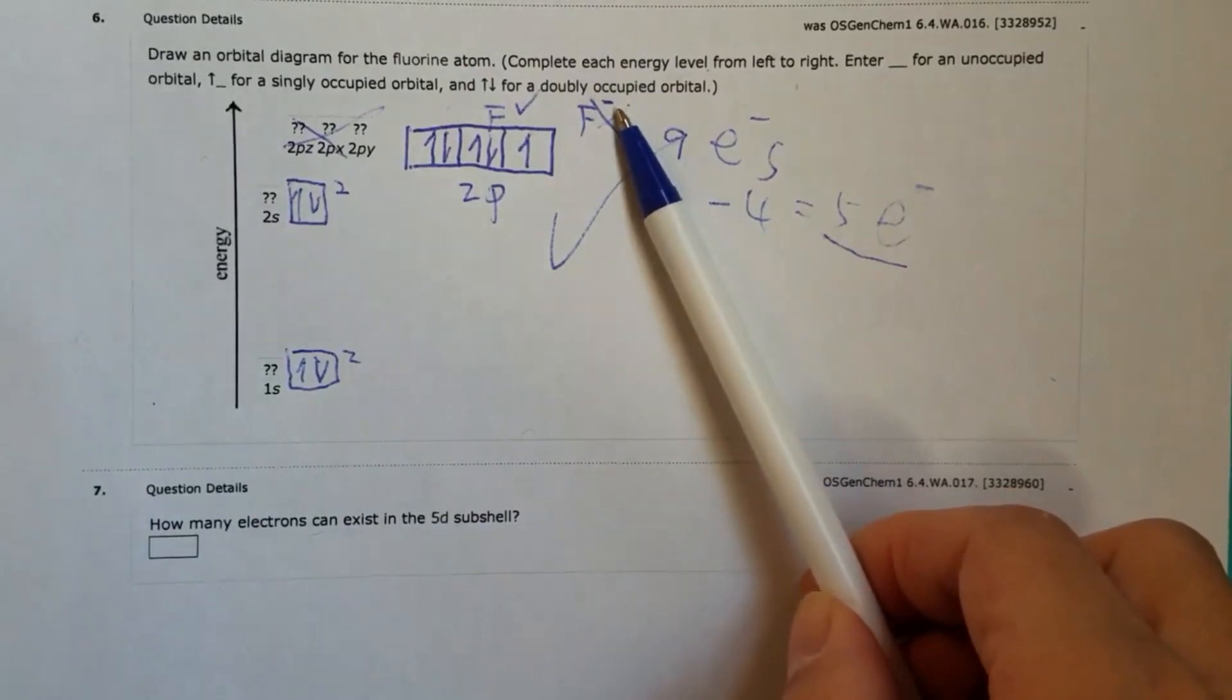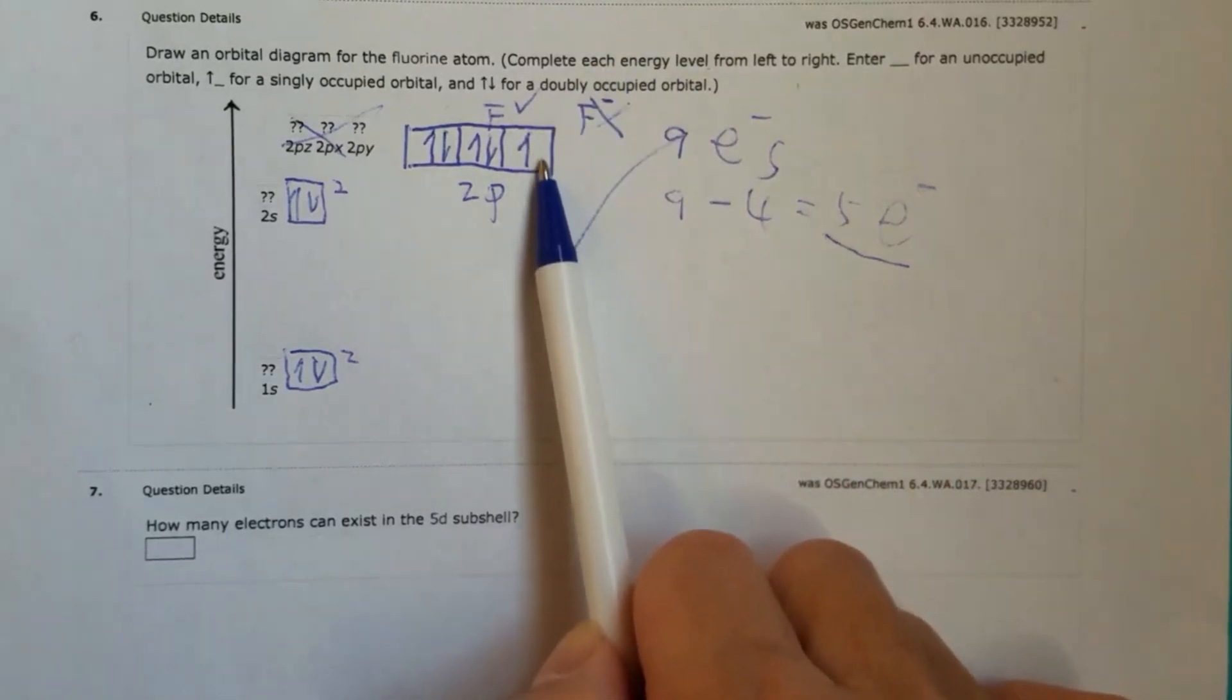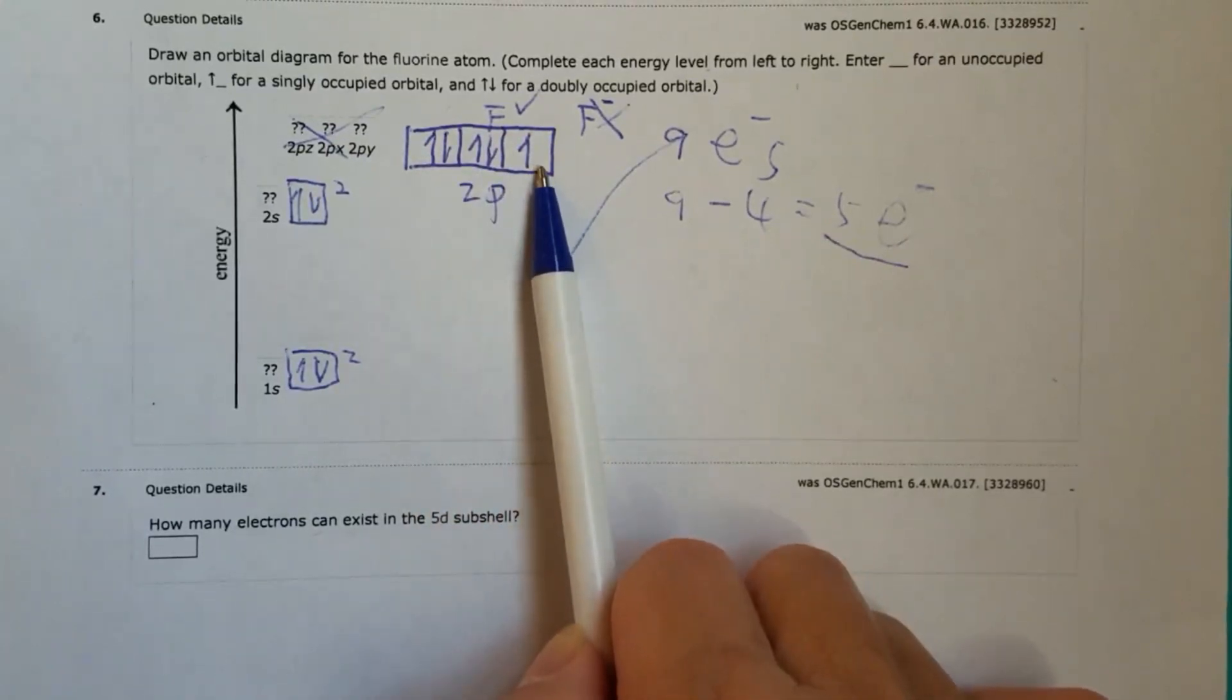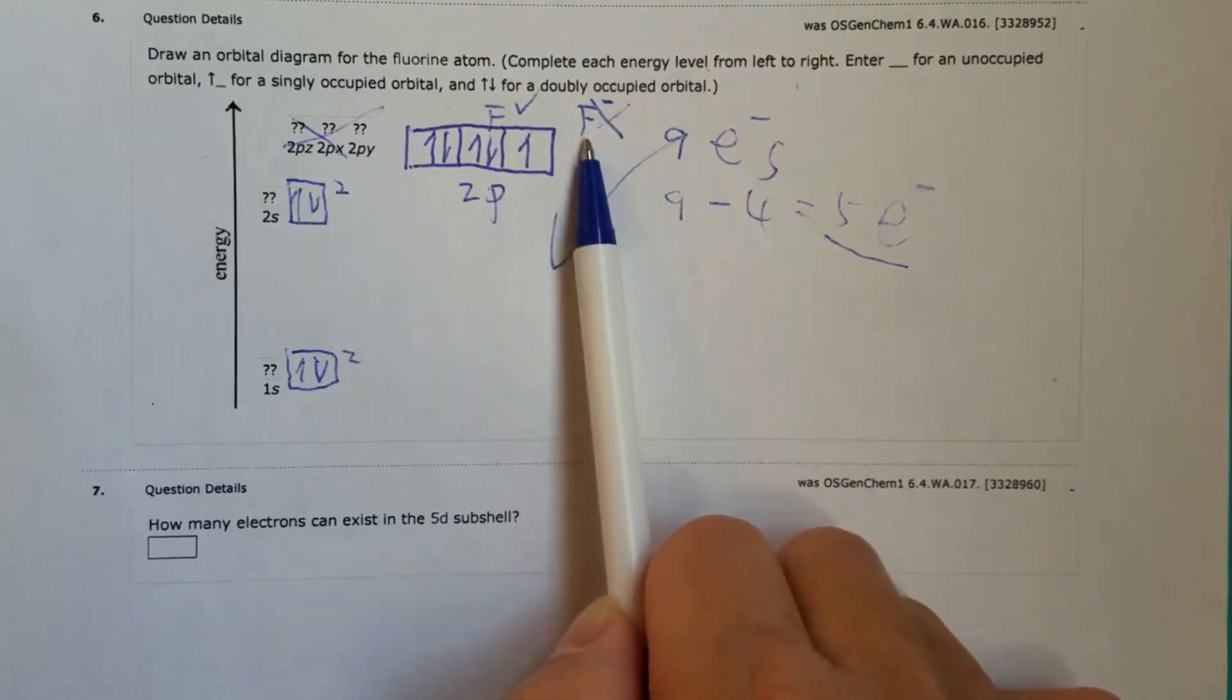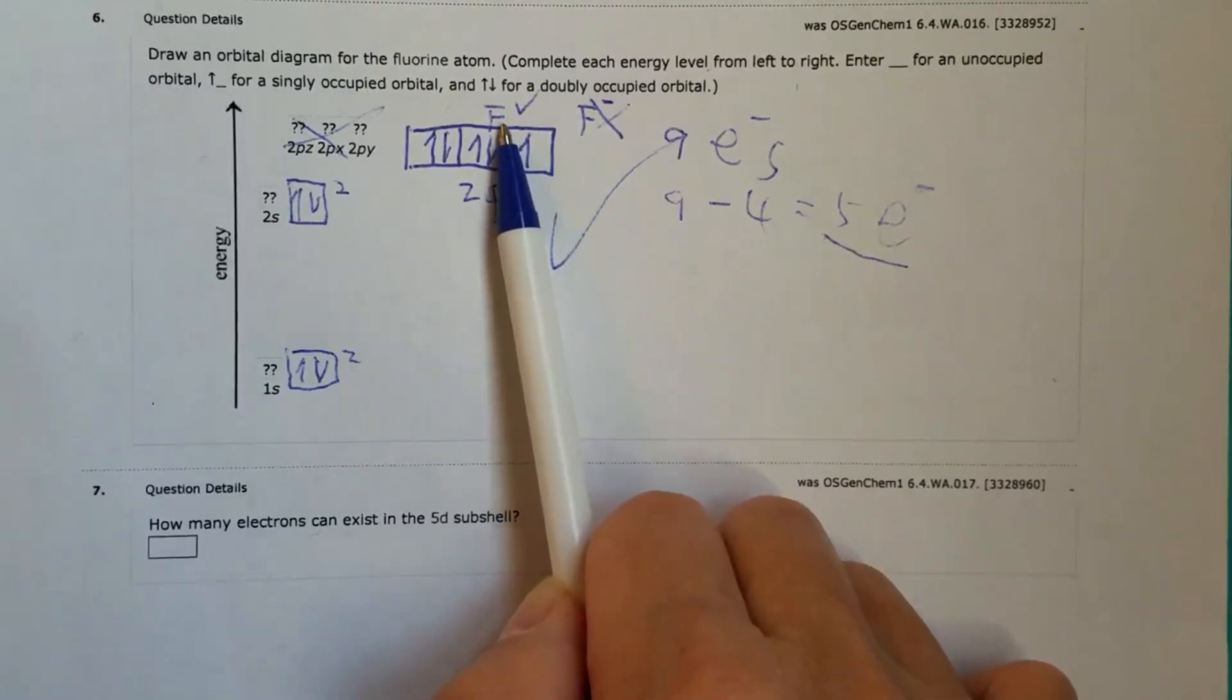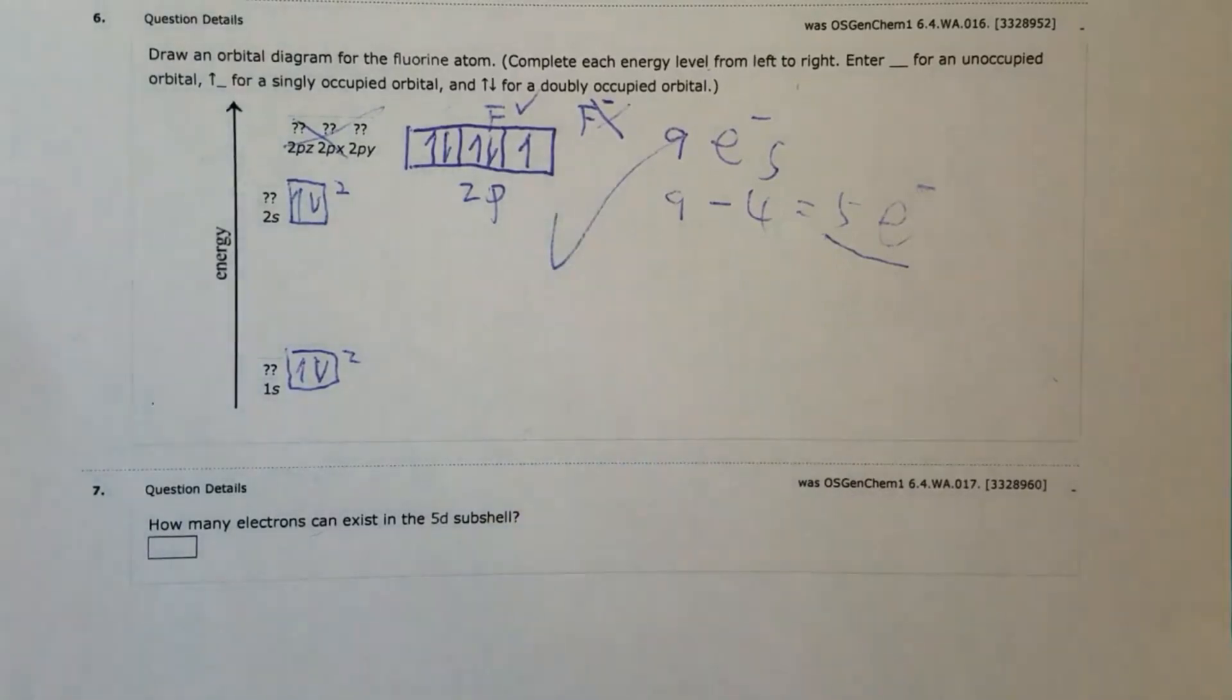Actually, if it were fluoride, it would have one more electron that makes 10 electrons, then the 10th one fluoride will be right here. And then you see this 2p will become fully filled. So therefore, it will be more stable. As a matter of fact, fluoride, F minus, is much more stable than fluorine. So yeah, that's something, of course, is not involved in this question, but I just would like to point that out so that you know. Okay, that's question number six.